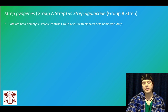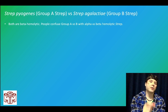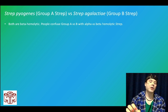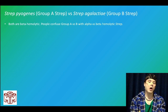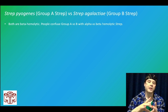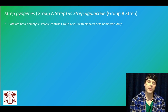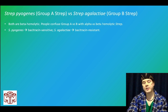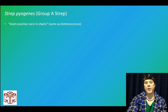Now the strep. Strep pyogenes is group A strep; strep agalactiae is group B strep — both are beta hemolytic. Students often confuse group A with alpha hemolytic and group B with beta hemolytic — that's wrong. Both group A and group B are beta hemolytic, meaning complete hemolysis on blood agar, a clear zone. Alpha hemolytic means incomplete hemolysis, a green zone. Gamma hemolytic means no hemolysis. Strep pyogenes is bacitracin sensitive; strep agalactiae is bacitracin resistant. Strep pyogenes appears as gram-positive cocci in chains, versus staph aureus as gram-positive cocci in clusters.